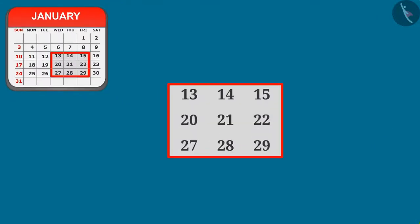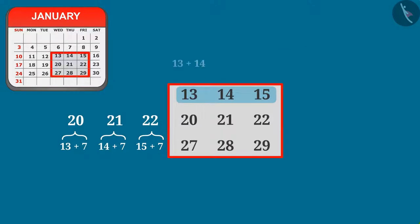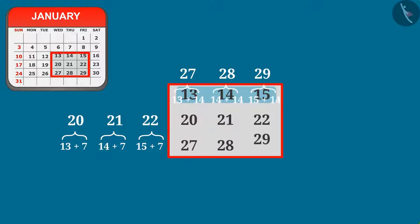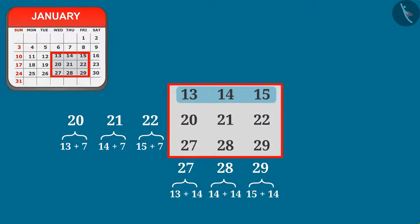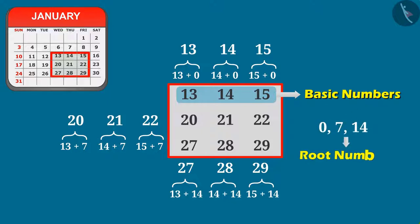In this square, by adding 7 to the first row I get the second row with numbers. By adding 14 to the first row I get the last row with numbers. By adding 0 to the first row I get the first row. That's why here 13, 14 and 15 are basic numbers, and 0, 7 and 14 are root numbers.